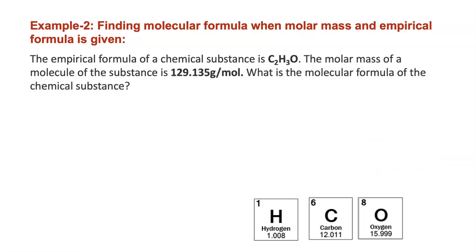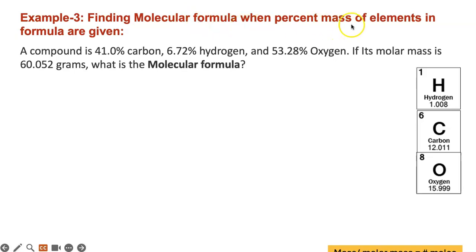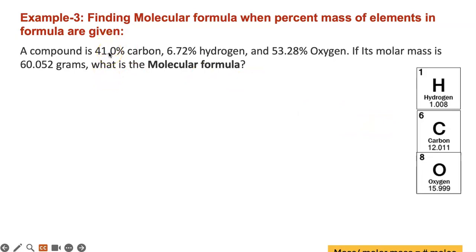Let's look at another problem. Example 3: finding molecular formula when the percent mass of each element in the formula is given. I've given you the percent masses — we covered this in lesson 6.6. The compound is made of 41% carbon, 6.72% hydrogen, and 53.28% oxygen. If its molar mass is 60.052 grams per mole, what is the molecular formula? It's just like the other problem, except you don't have the empirical formula — you are supposed to find it using this percent composition information.